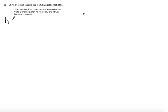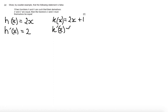So what I mean by this is if we take h equals 2x and then say k equals 2x plus 1. What I can see from this is that h'(x) is equal to 2 and k'(x) is also equal to 2.